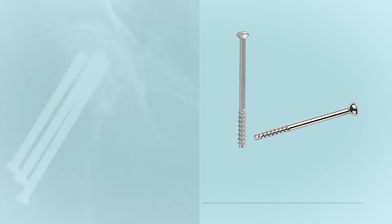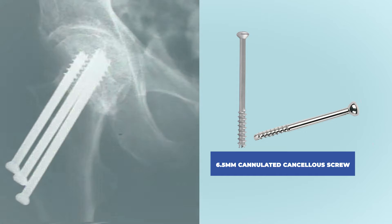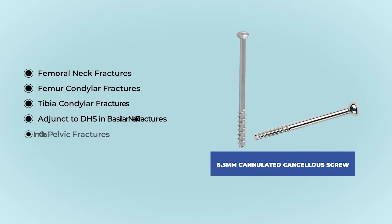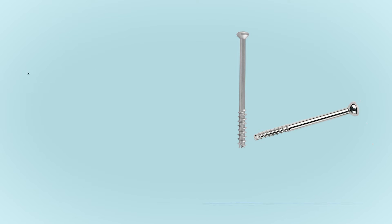Today we will discuss the 6.5mm cannulated cancellous screw and other related screws and instruments. These screws are generally used to fix fractures like femoral neck fractures, femur condylar fractures, tibia condylar fractures, as adjunct to DHS in basilar neck fracture, and in certain pelvic fractures.